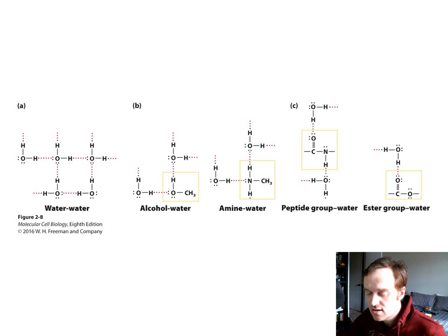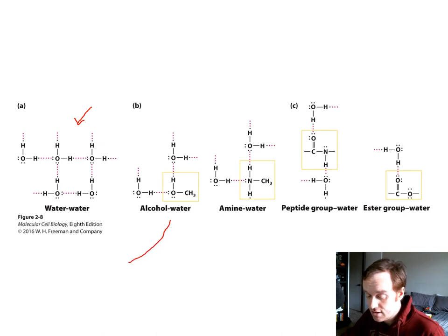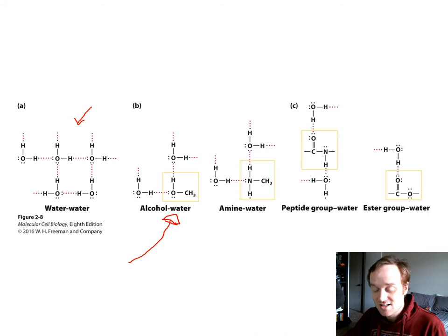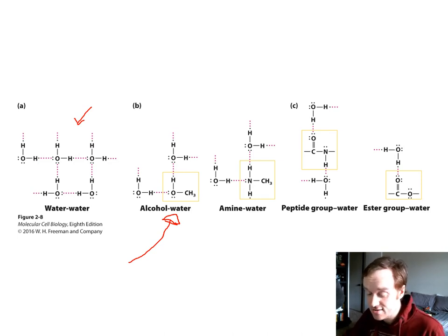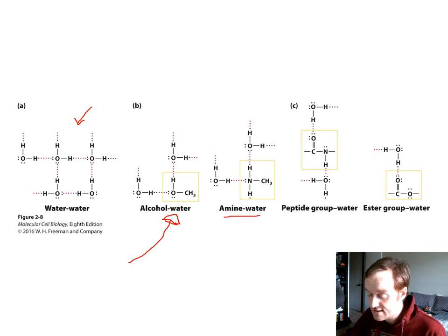Water can form hydrogen bonds with itself and many other complexes. In liquid form, water forms hydrogen bonds with other water molecules. It can also form hydrogen bonds with alcohols and amines, which solubilize those compounds — that's why alcohol is solubilized in water and doesn't settle out. Peptide groups and ester groups present in many biomolecules also form hydrogen bonds with water, keeping them soluble. So amines, peptides, and esters all form hydrogen bonds and are thus soluble in water.